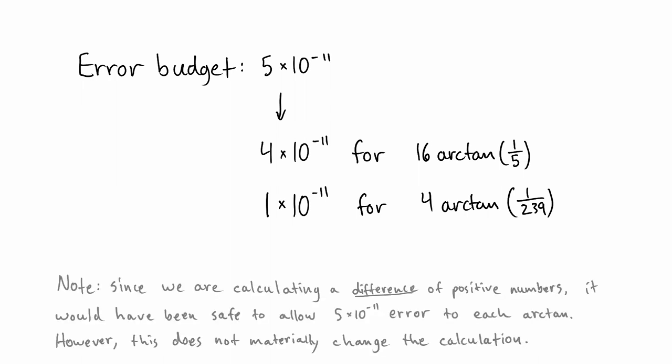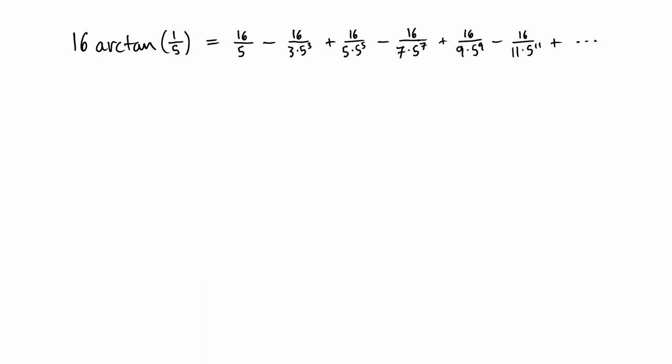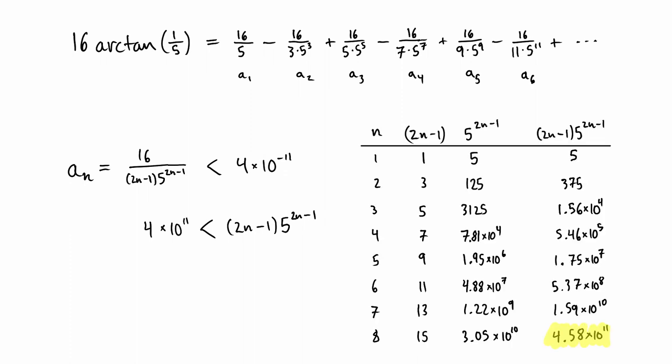The first order of business, then, is to figure out how many terms we should calculate for 16 arctan of 1 fifth. The absolute value of the nth term of this series has the given closed form. We would like to know when this becomes less than the error budget of 4 times 10 to the minus 11, which can be rendered as an inequality. In an attempt to solve this, we bring all the ends to one side, but this is not an easy inequality to solve in an exact way. However, by constructing a table, one may compute that n equals 8 is the smallest solution to this inequality.